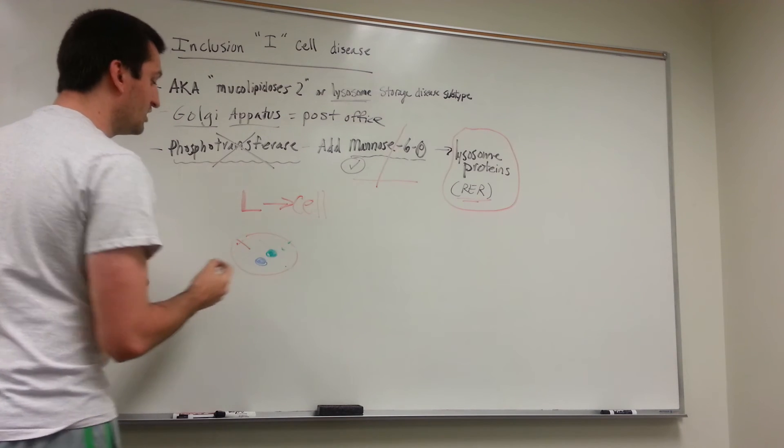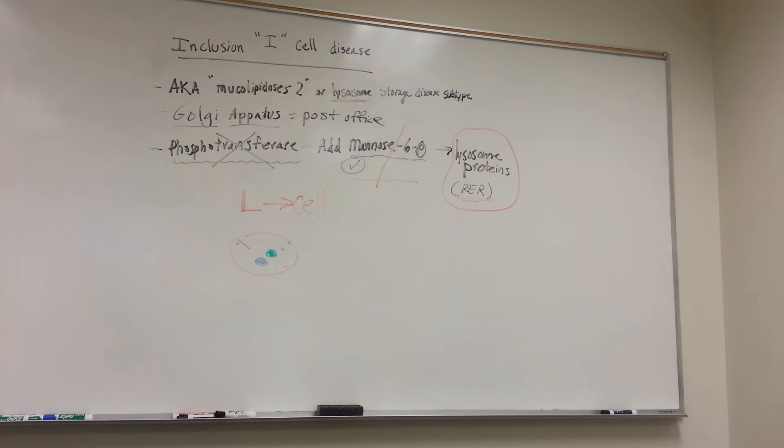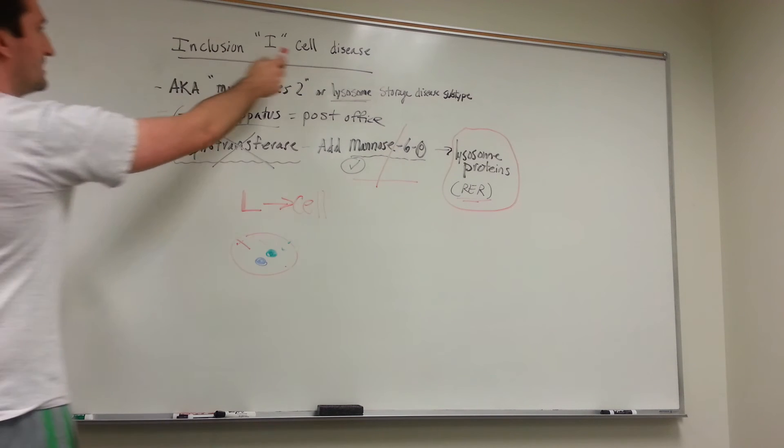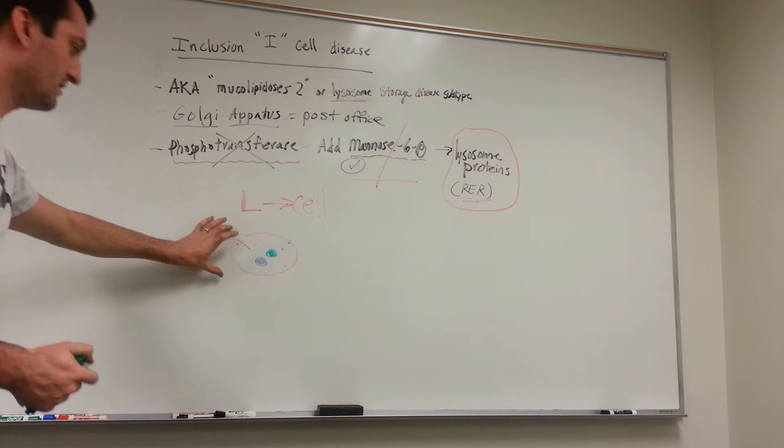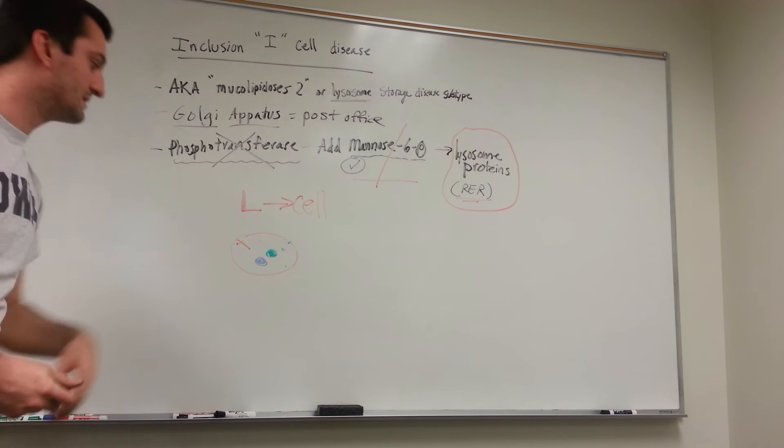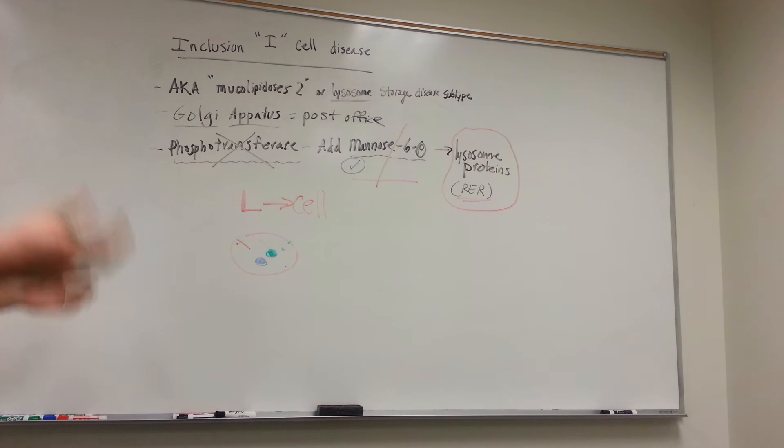So they form these inclusions, these inclusion bodies. That's why we get Inclusion Cell Disease. We have inclusions within our lysosome—lysosomes that cannot break down this material, this cellular debris. And really it's unsustainable to life.